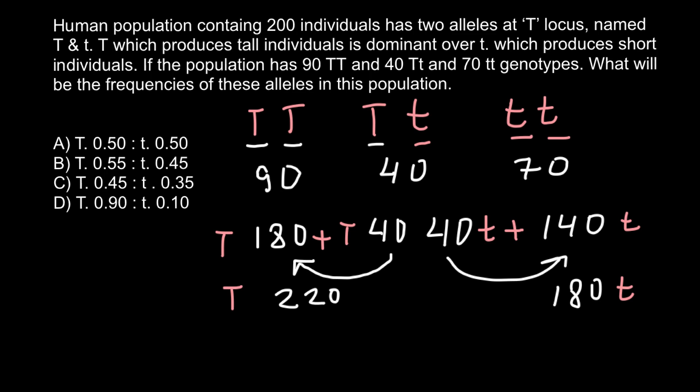And as you see total number of alleles, 220 plus 180. What is the percentage of alleles? What is the percentage of this number? What is the percentage of this number? We can add these two numbers and we are going to get 400. So this is total number of alleles that these three groups have.